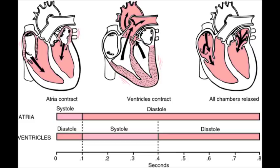Looking at the cardiac cycle diagram, systole only occurs in the atria or the ventricles at any one time, not both simultaneously. The ventricular systole is longer in duration than atrial systole. You can see blood flowing from the atria into the ventricles, then from the ventricles into the arteries, and when all chambers are relaxed, blood flows back into the atria.